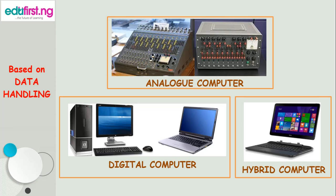Now we'll look at the classification of computer based on data handling. Based on data handling, computers are classified into: one, analog computer; two, digital computer; and three, hybrid computer. We'll take them one after the other.